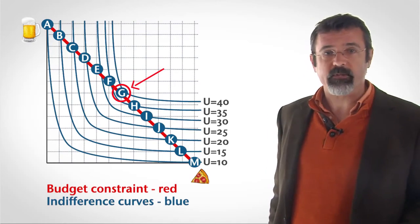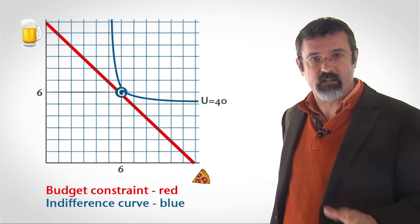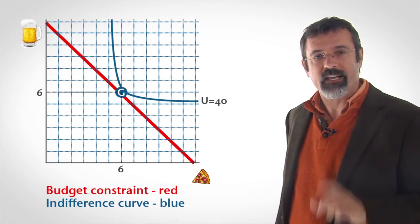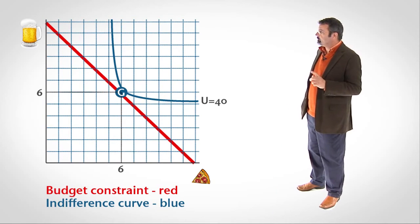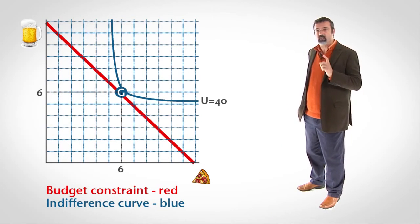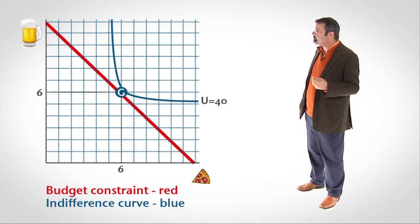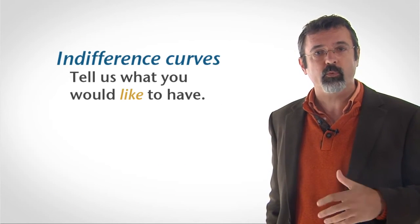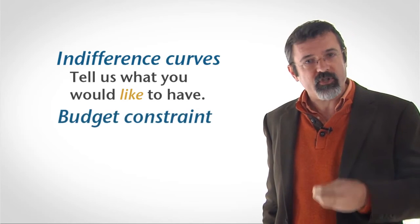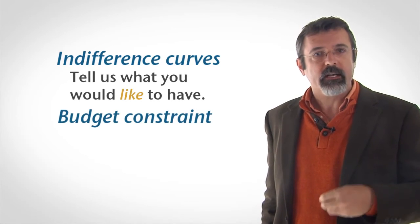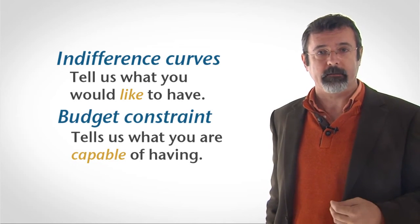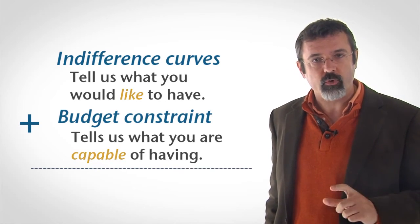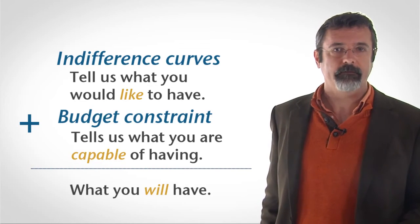Let's clean up this picture by removing the extraneous indifference curves. Given your budget constraint, the highest utility you can obtain is 40, and you obtain it by consuming six beers and six slices of pizza. Indifference curves tell us what you would like to have. The budget constraint tells us what you're capable of having. The combination of the two tells us what you will have.